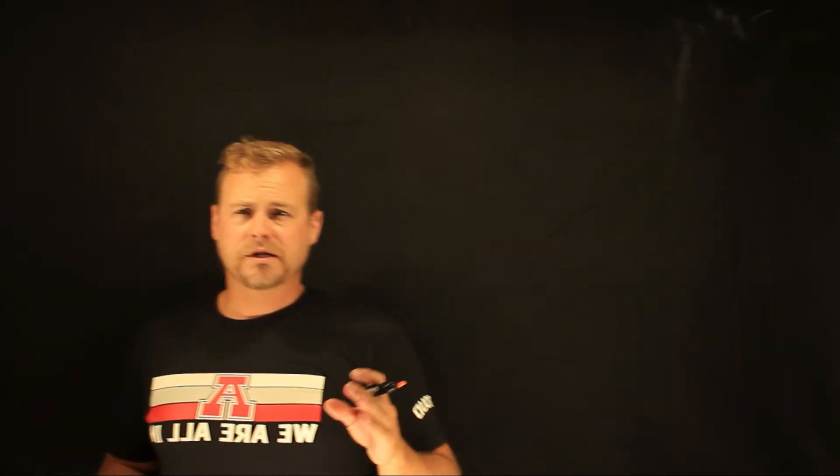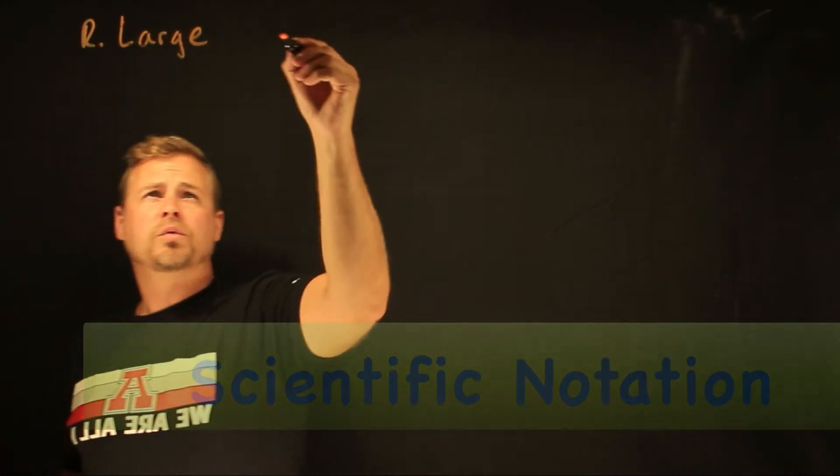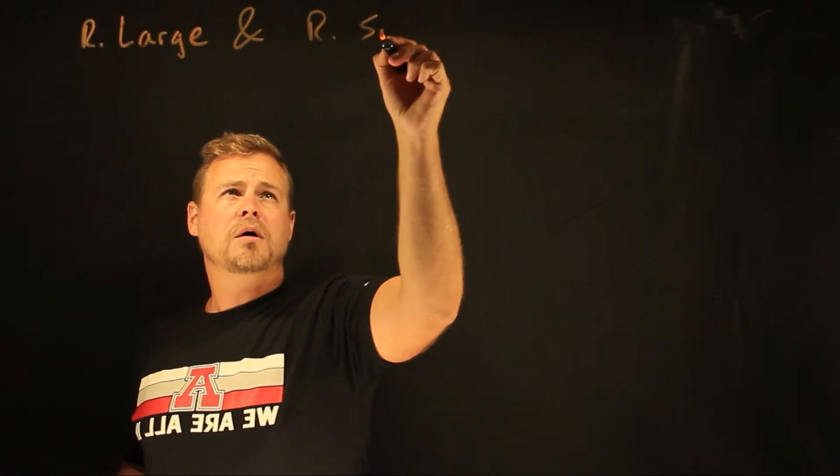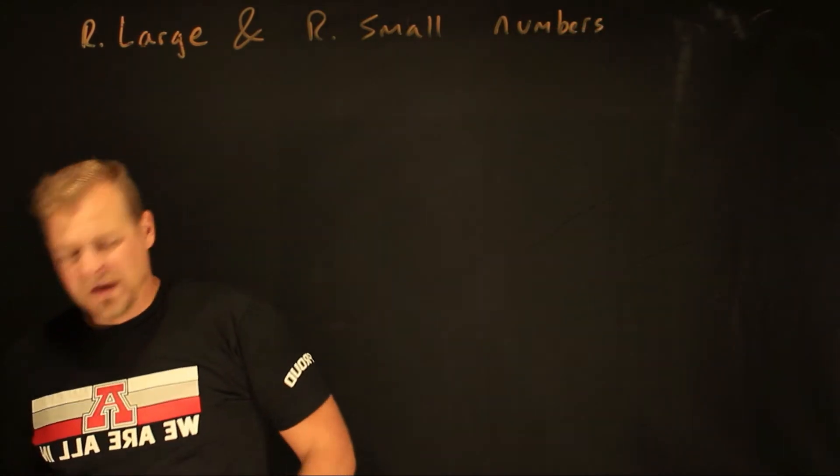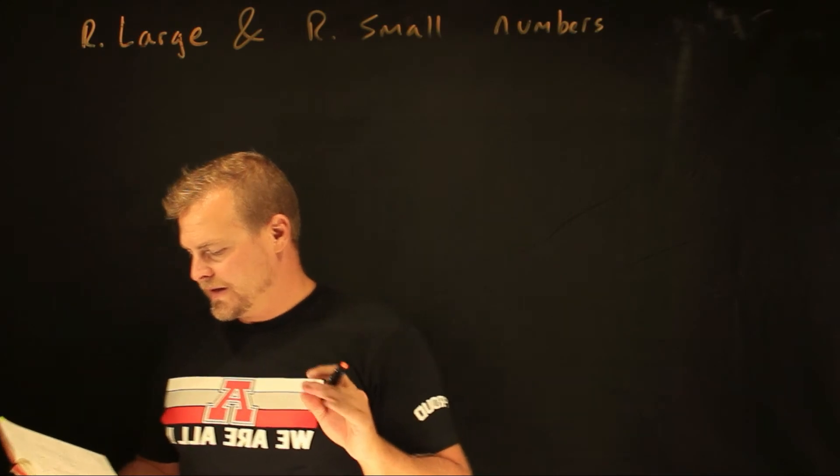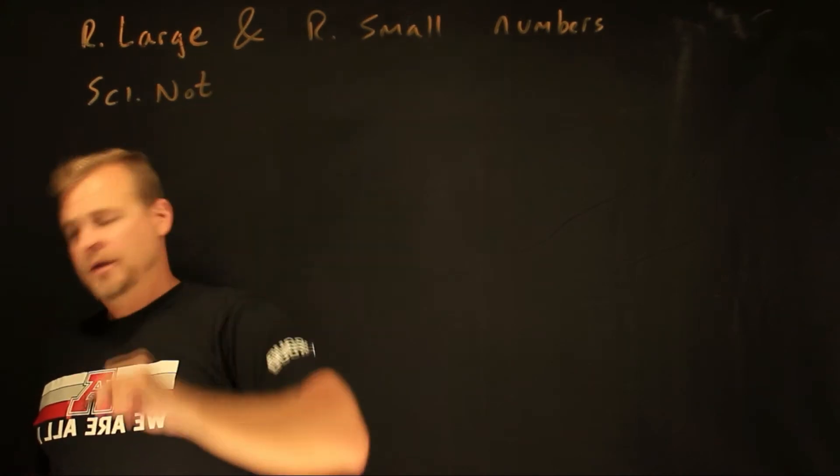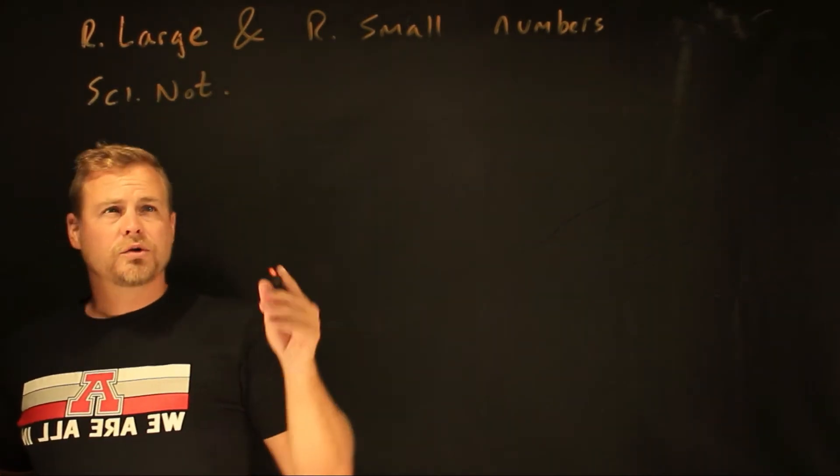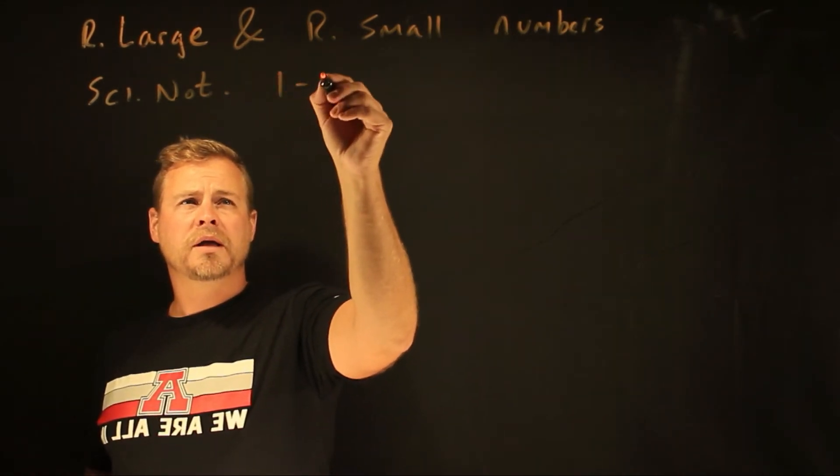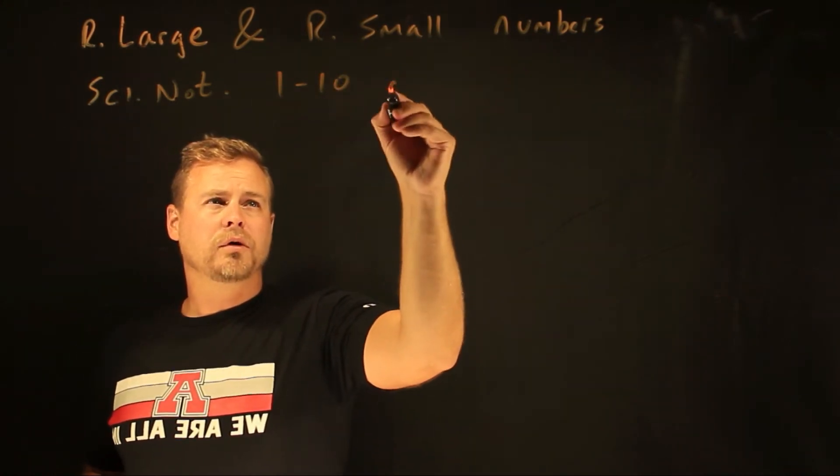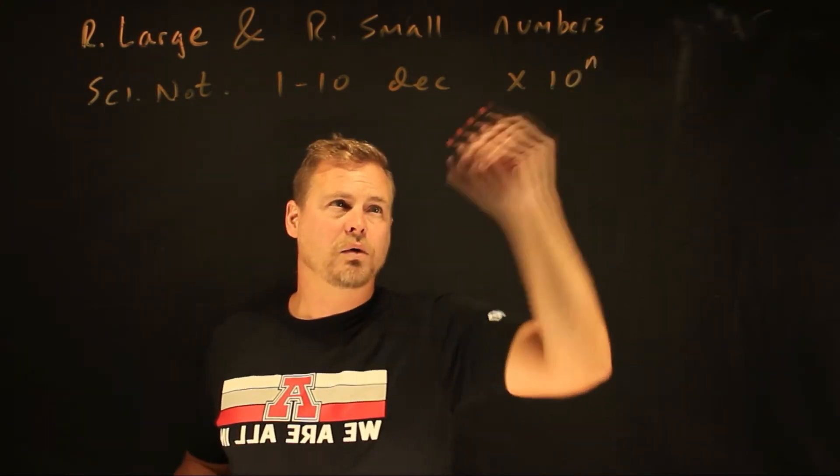We in physics deal with really large numbers and really small numbers. So the way we deal with this is scientific notation. So scientific notation, or sci note, is when you write the number with a single integer between 1 and 10 with a decimal and a times 10 to some power n.